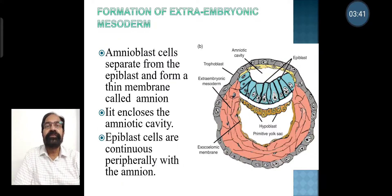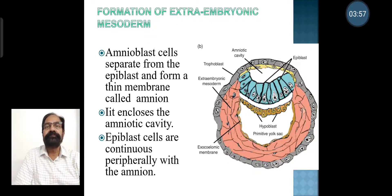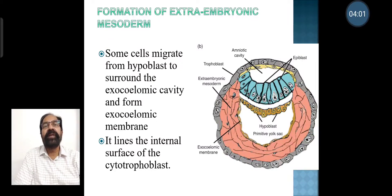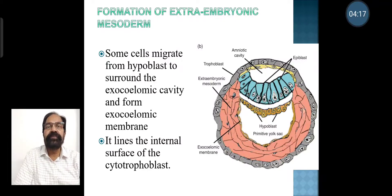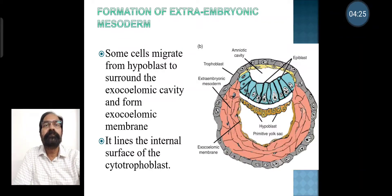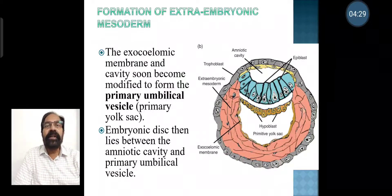Amnioblast cells separate from epiblast and form a thin membrane called amnion. It encloses the amniotic cavity, and the epiblast cells are continuous peripherally with the amnion. Some cells migrate from hypoblast to surround the exocoelomic cavity and form the exocoelomic membrane, which lines the internal surface of the cytotrophoblast. The exocoelomic membrane and cavity soon become modified to form the primary umbilical vesicle, also called the primary yolk sac.